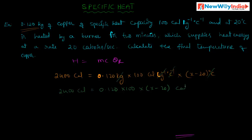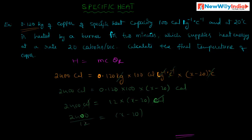The remaining unit is calorie on both sides, so the units cancel. Multiplying, 0.120 into 100 is equal to 12. So we get 12 into x minus 20 equals 2400. Dividing both sides by 12, we get x minus 20 equals 200. Therefore x is equal to 200 plus 20, and we get x is equal to 220.